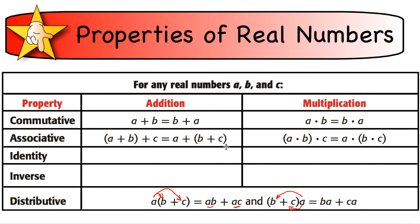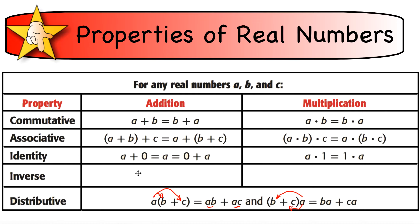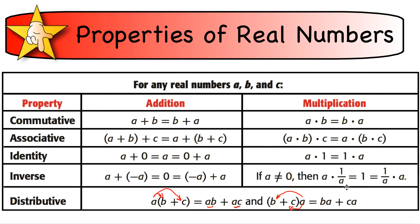The identity property says that whatever we add to a number, we want to get the same number back. For addition, what number can we add to, say, 3 to get 3 back? The identity is 0 — so 0 is called the additive identity. What could we multiply any number by to get the number back? That's 1 — the multiplicative identity. The additive inverse is what we add to a number to get the identity back. So if I have 3, I add negative 3 to get 0. For multiplication, the multiplicative inverse is what you multiply by to get 1 — and that is the reciprocal.